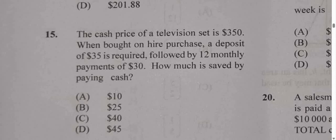The cash price of a television set is $350. When bought on hire purchase, a deposit of $35 is required, followed by 12 monthly payments of $30. How much is saved by paying cash?